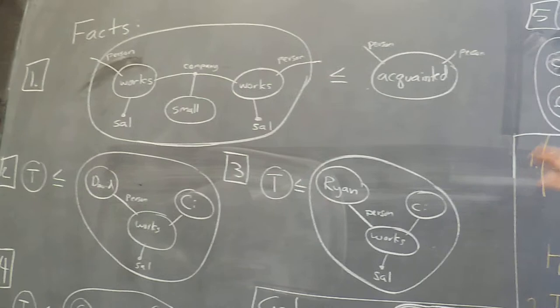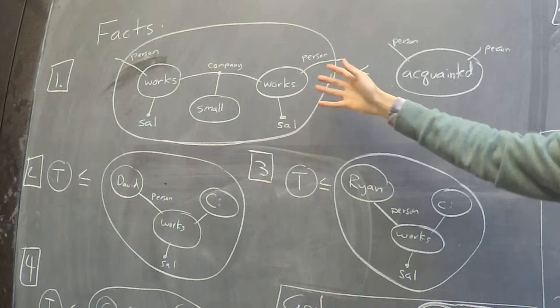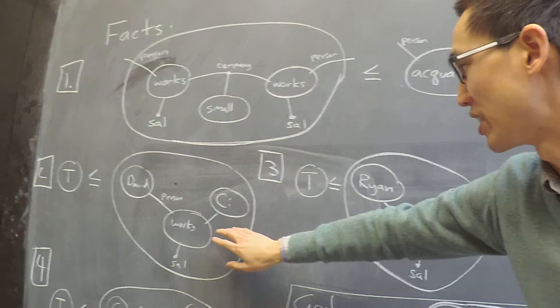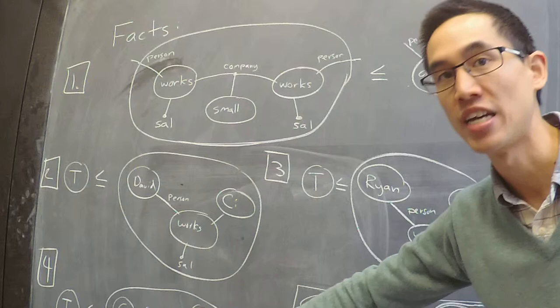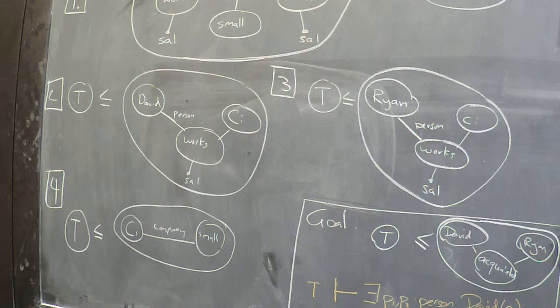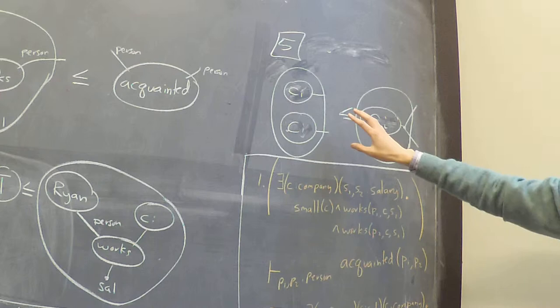So the argument we're going to give takes these five facts. We will have that if two people work in the same small company then they're acquainted. We have that it's true that David works at CI and it's true that Ryan works at CI and that CI is a small company.